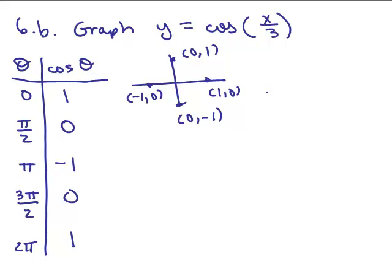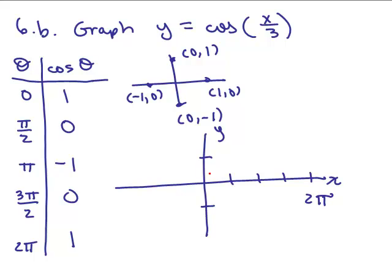So we do have to know that basic graph of Y equals cosine X, so this is 2 pi. We know that we've got 0, 1, it starts up right and then it goes down to 0 and then down to negative 1 and then back up and here and the same thing over on the left side.